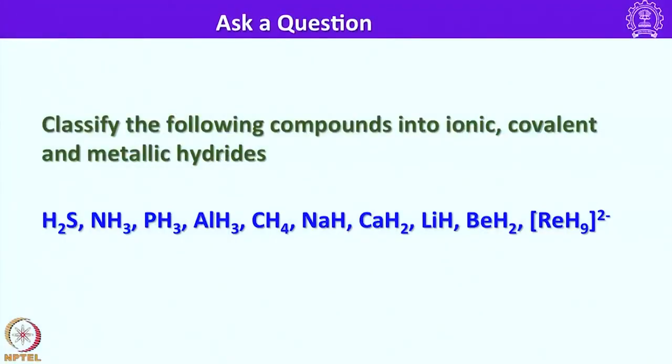Let us have some questions. Classify the following compounds into ionic, covalent and metallic hydrides. Alkali metals and alkaline earth metals form ionic hydrides because they are extremely electropositive elements, whereas P-block elements form covalent hydrides and transition metals form metallic hydrides. Hydrogen sulfide, ammonia, PH3, aluminum hydride are all covalent hydrides. Sodium hydride, calcium hydride, lithium hydride and beryllium hydride are ionic hydrides. ReH9 2-minus is metallic hydride.